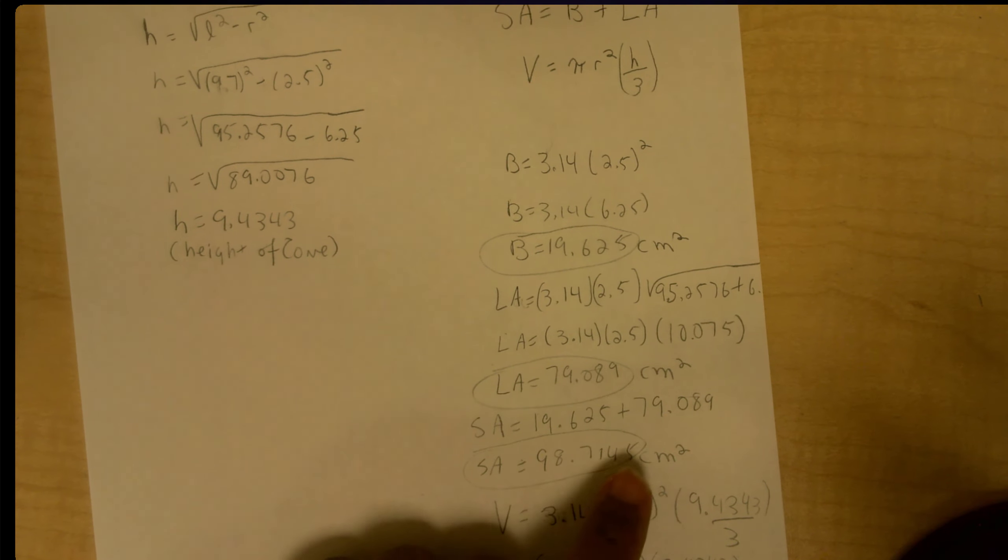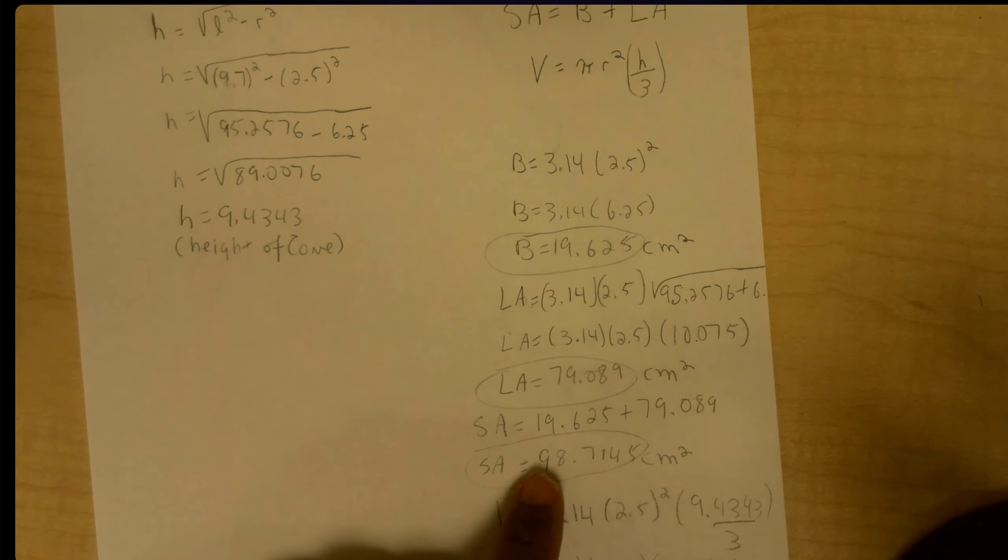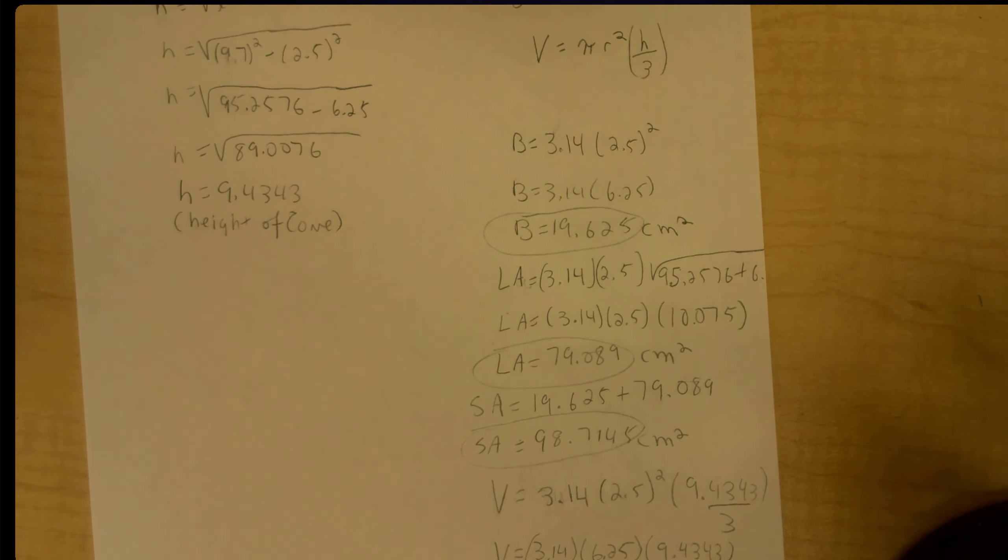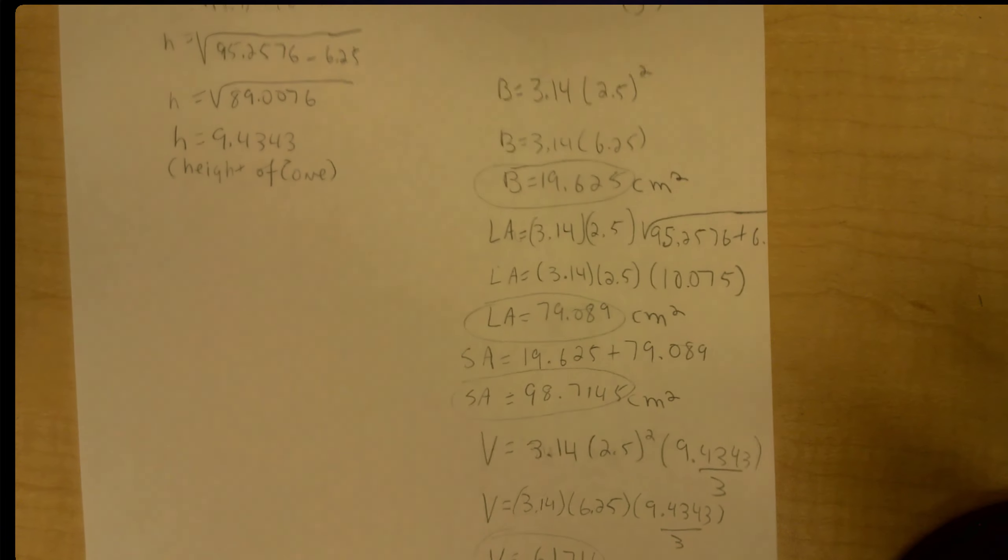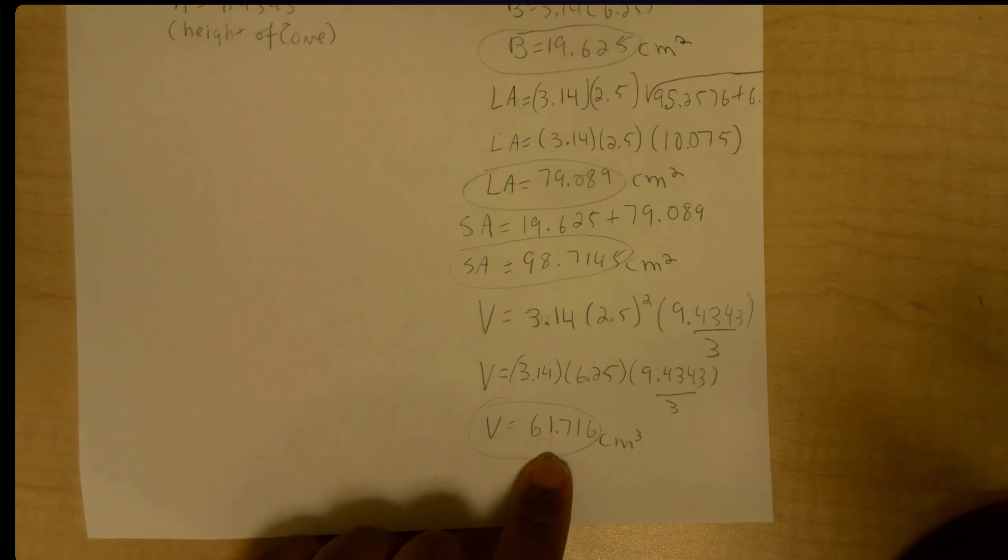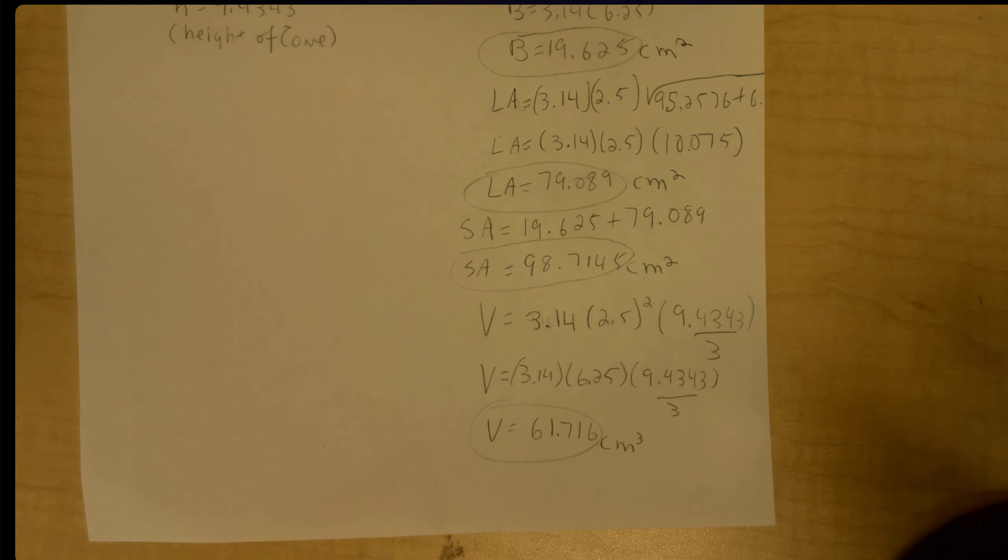My surface area, I add my base to it, my area of my base, and it gives you my total surface area. My volume, I have Pi r squared times h divided by 3 gives me a volume of 61.716 cubic centimeters and that's the end of those calculations there.